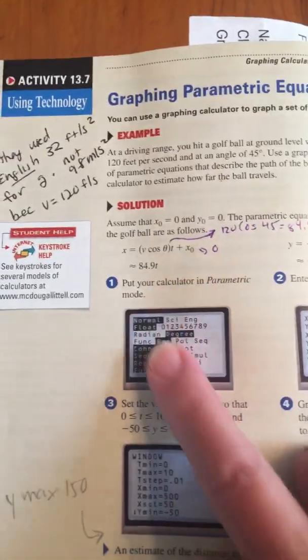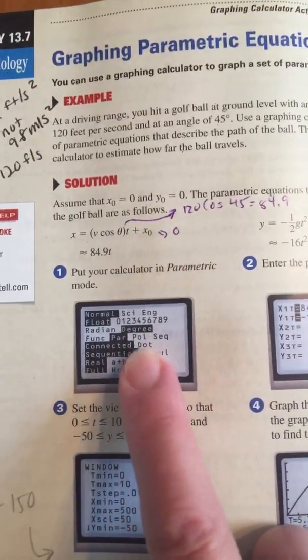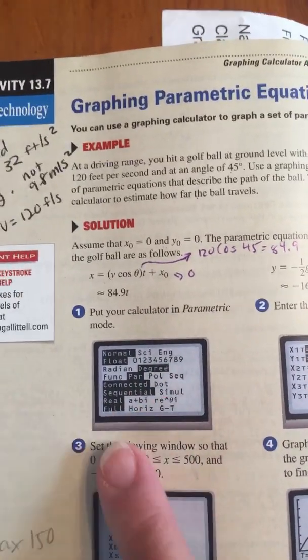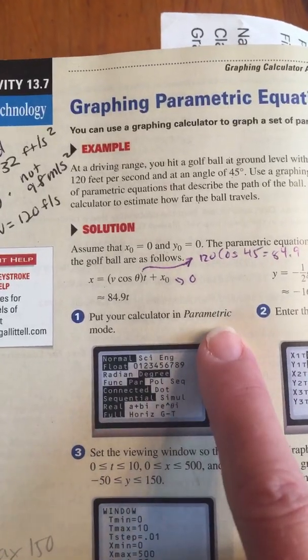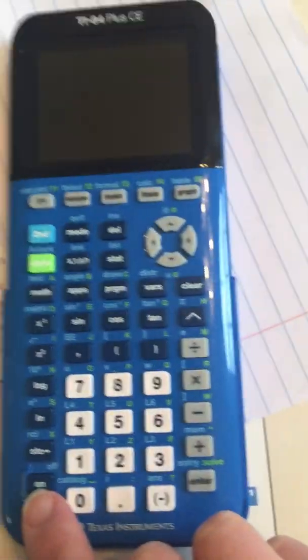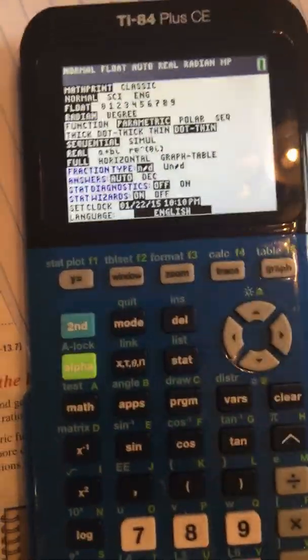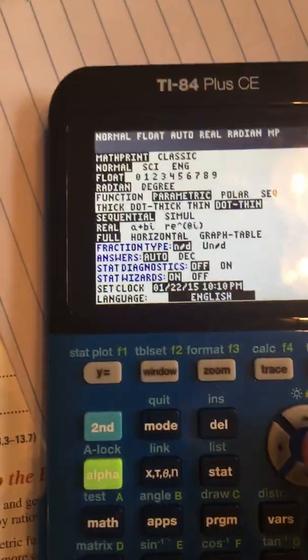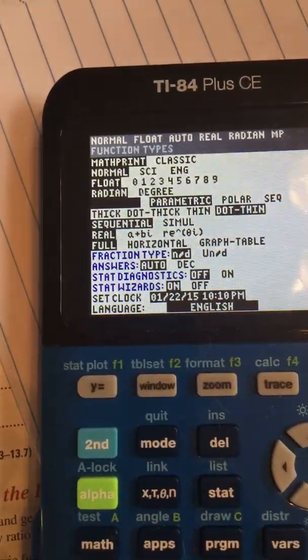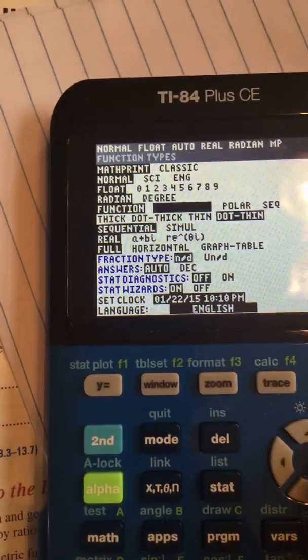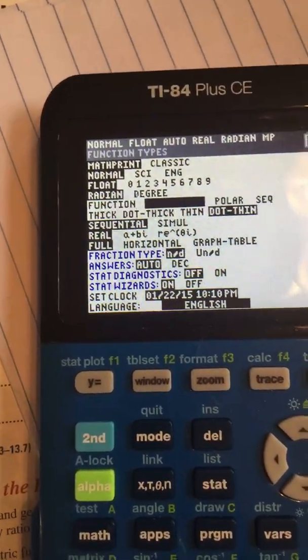So those are our two equations, but we got to put it in under parametrics in our calculator. So go to your calculator, turn it on, go to mode and then arrow down. Right now you're probably in function. You need to arrow over to parametric and hit enter.